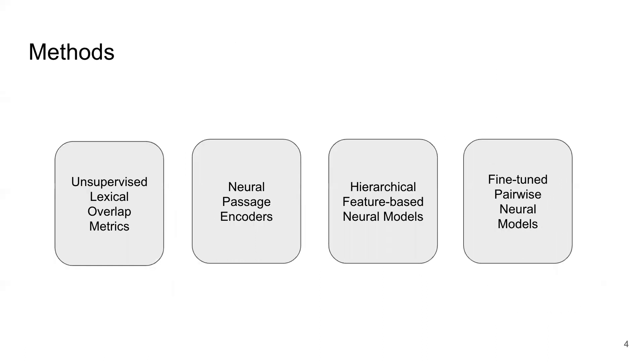We experiment with four classes of models for this task: unsupervised lexical overlap metrics, neural passage encoders, hierarchical neural models with pre-computed frozen embeddings, and slower fine-tuned BERT-based pairwise neural models.